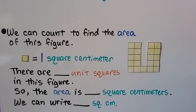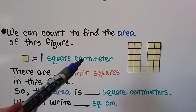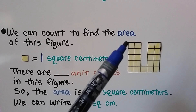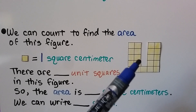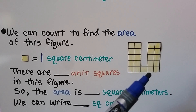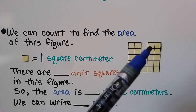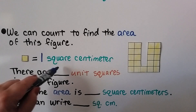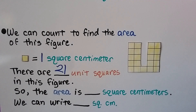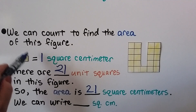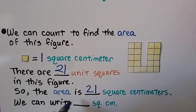We can count to find the area of another figure. Each little yellow square is equal to one square centimeter. Centimeters are smaller than inches, so this square is smaller than our last example. We count them: 1, 2, 3, 4, 5, 6, 7, 8, 9, 10, 11, 12, 13, 14, 15, 16, 17, 18, 19, 20, 21 unit squares.